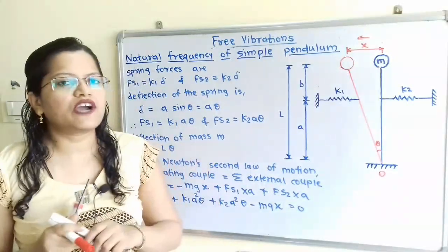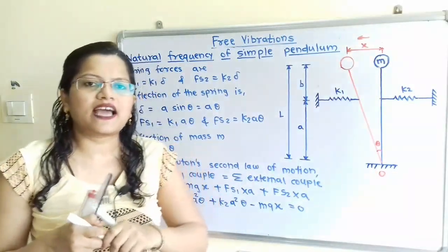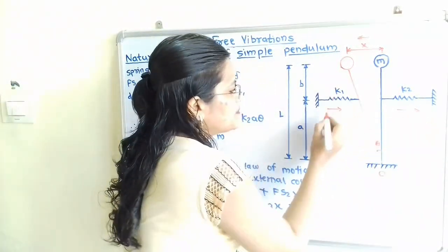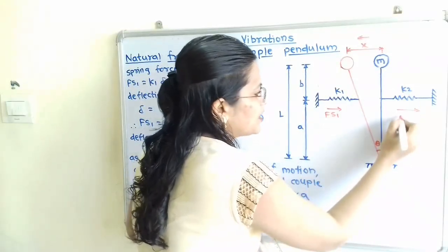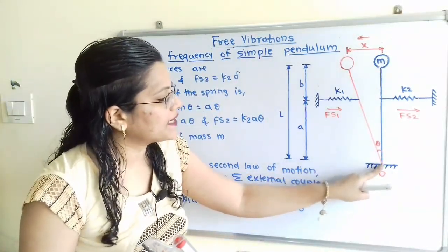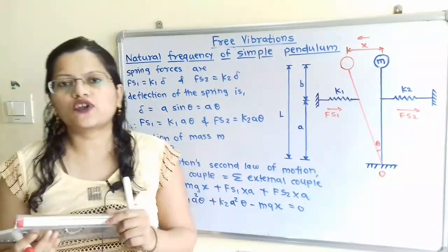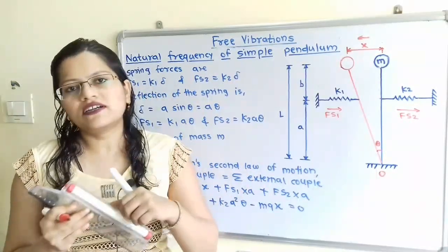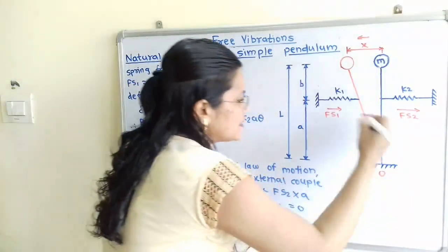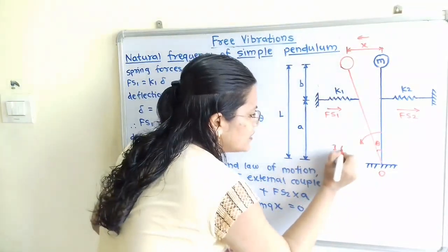The spring forces are developed in the opposite direction of displacement. Since displacement is towards the left hand side, the spring forces FS1 and FS2 are towards the right hand side direction. Angular displacement theta is also taking place about point O, and therefore we have to show the accelerating torque in the direction of the angular displacement. The angular displacement is in the anticlockwise direction, so the accelerating torque I·theta-double-dot is also in the same direction.